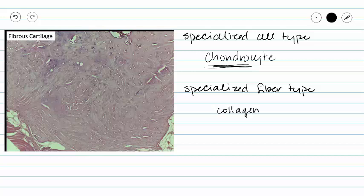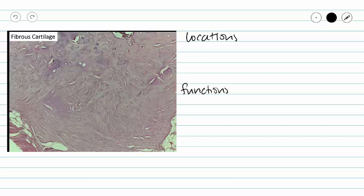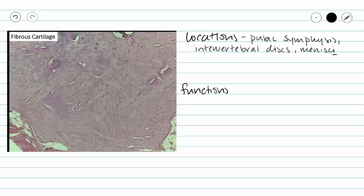Now let's think about our locations and functions. Locations for fibrous cartilage include our symphysis, and we've got two major types of symphysis. We have our pubic symphysis where our two sides of our pelvic girdle attach to each other in the front, and we have our intervertebral discs between our vertebrae. We also see fibrous cartilage in the menisci that we find in our knees. Menisci with an I on the end is plural for meniscus.